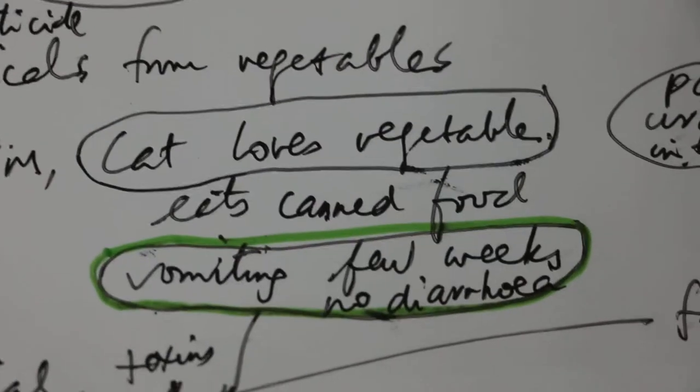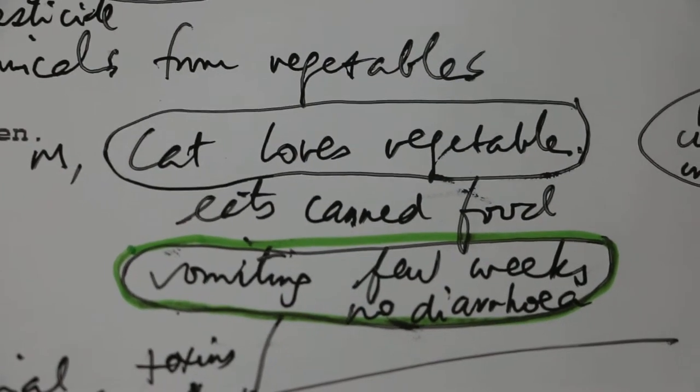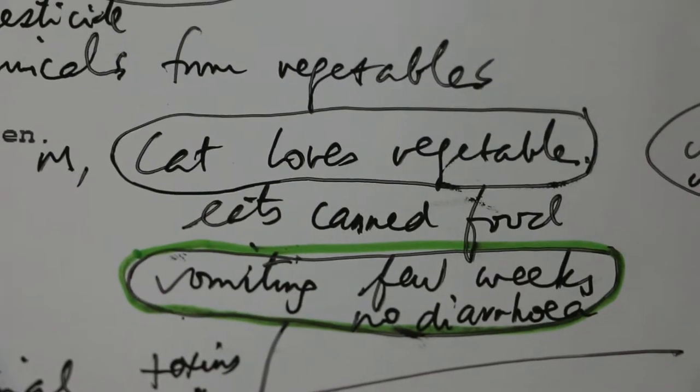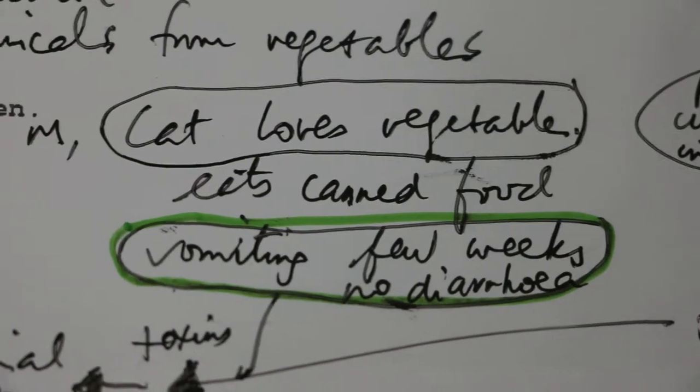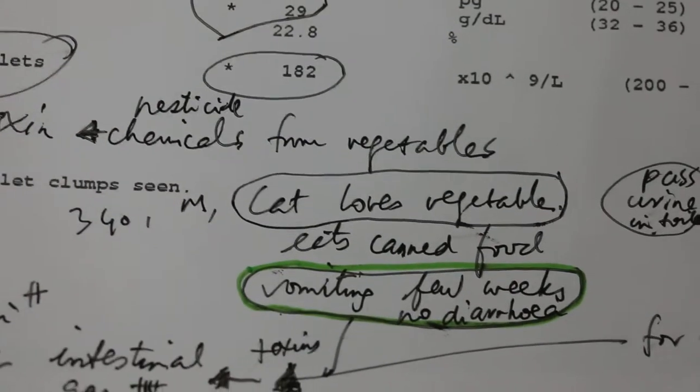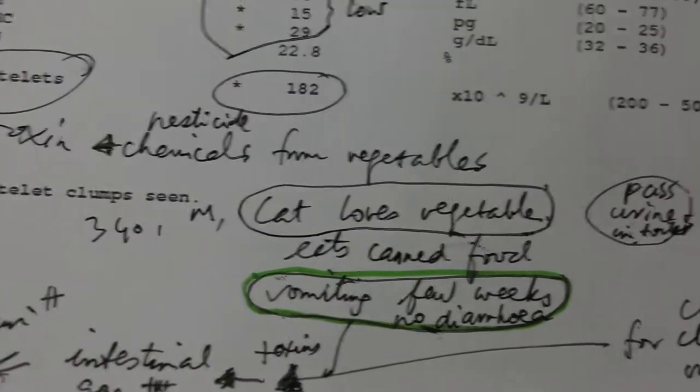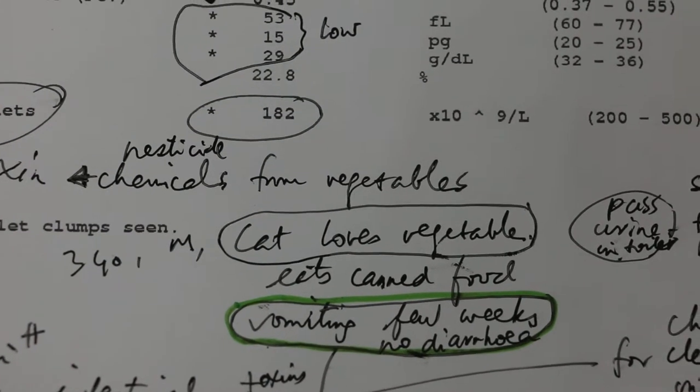Well, this cat loves vegetables, so every time they bring vegetables home, the cat will eat vegetables directly. Vegetables are always sprayed with insecticide, so over time this cat's intestines might have been poisoned by the pesticides.